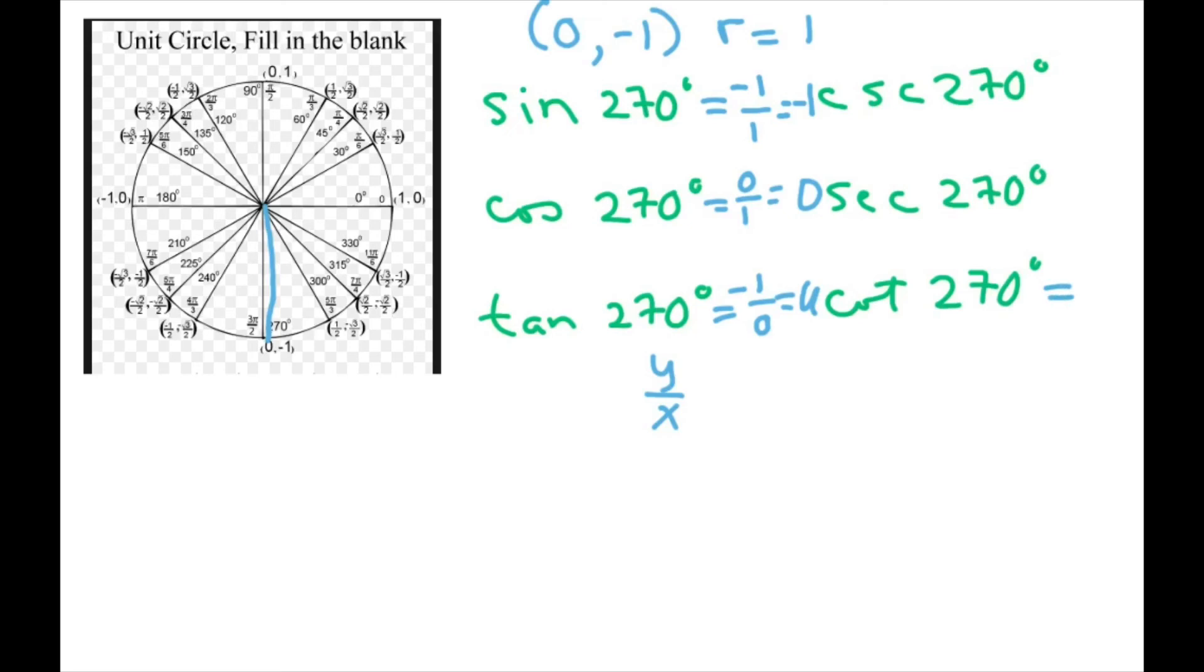That means this is going to be 0, because those are inverses of each other, or reciprocals. And cosecant is going to be 1 over negative 1, which equals negative 1. And again, I had an extra circle here, but that's your quadrantals, your 90 degree ones that go by 90s. Quadrantals.